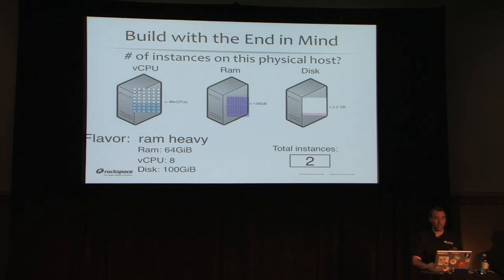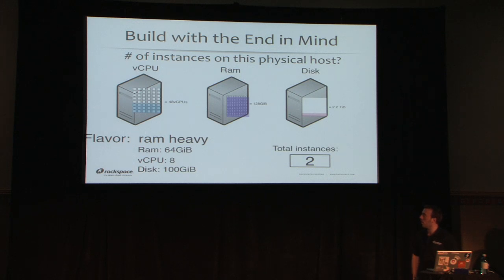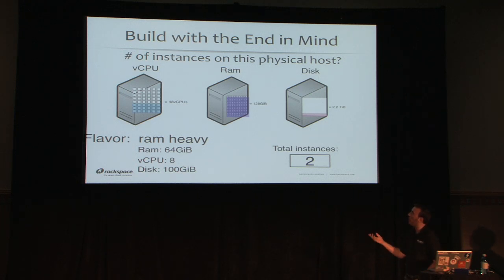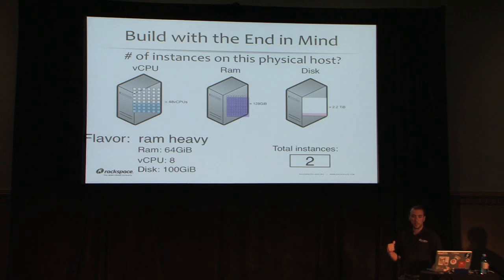On the other end of the spectrum, consider a heavy RAM flavor — maybe 64 GB RAM, 8 CPUs, 100 GB disk. Here I'm consuming all my RAM but not efficiently using cores or disk space, and I'm only running two instances. So the resource balance is off in the opposite direction.